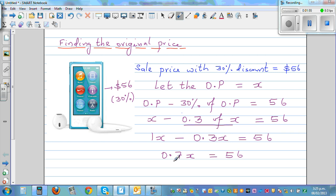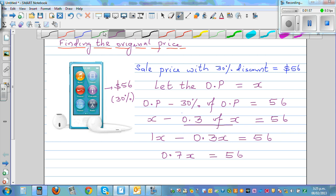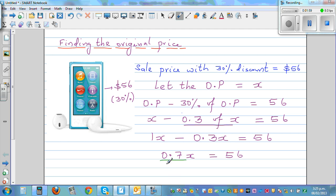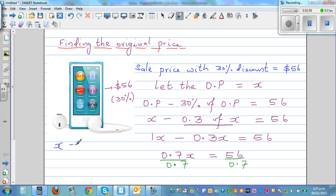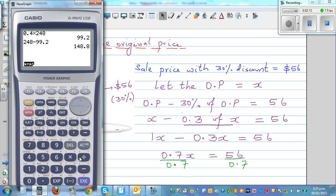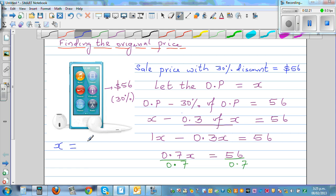So now I want to cancel this 0.7. So I'm going to divide this side by 0.7. So you have to divide this side by 0.7. So that is X is equal to, I'll write it here, 56 divided by 0.7 is 80. The price was $80.